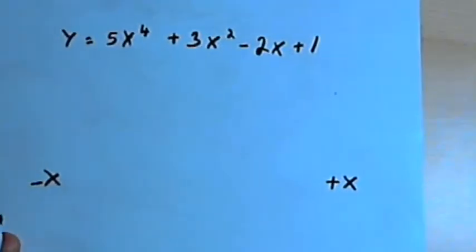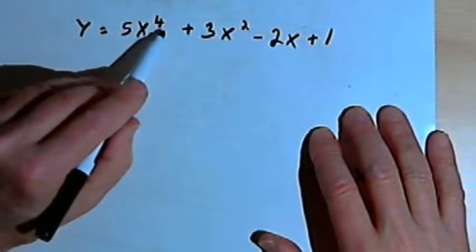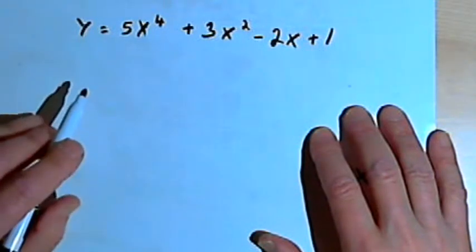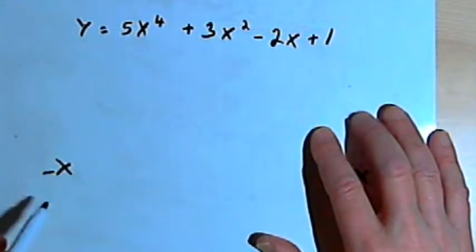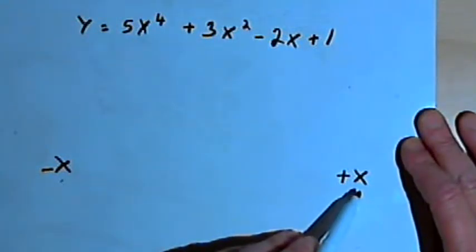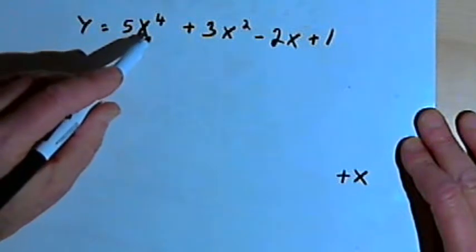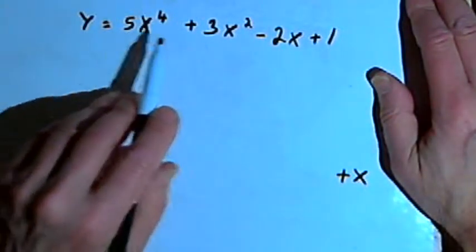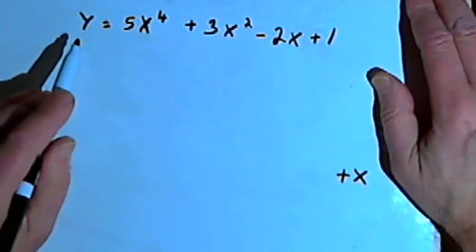Let's start with this example. Here I've got a polynomial function: y equals 5x to the fourth plus 3x squared minus 2x plus 1. The exponent for this first term — which is the biggest exponent in the whole polynomial — is an even number. In this case it's a 4, so we can say that the polynomial is an even degree polynomial.